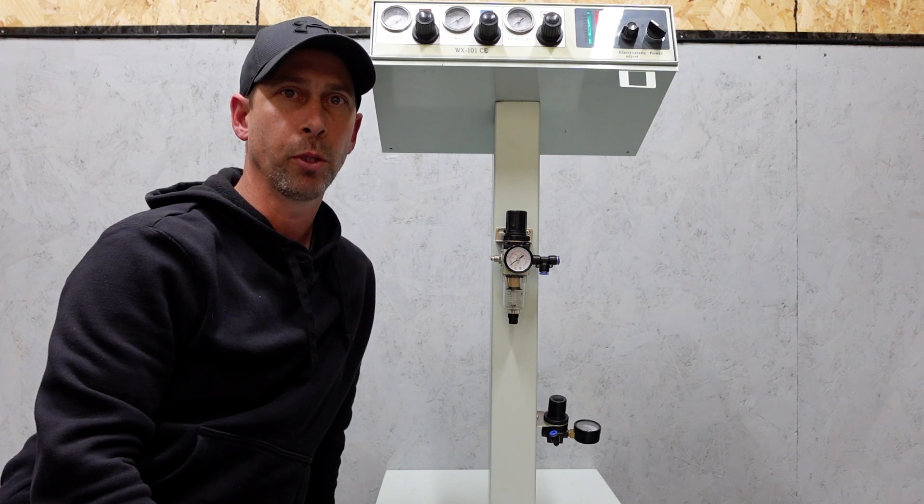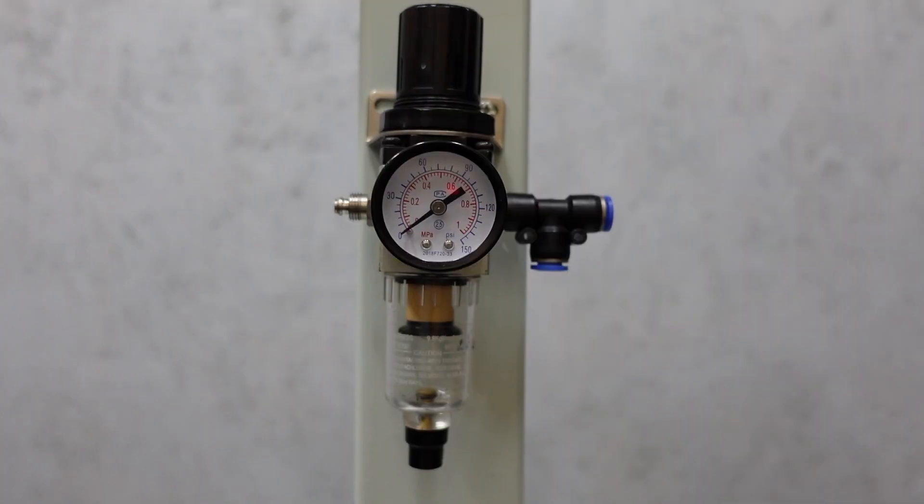As you can see I've already mounted both the gauges. This is the water trap that's supplied with the machine. First thing you're going to want to do is upgrade that to something a little bit more efficient, as in the past year I haven't even seen one drop of water being collected.